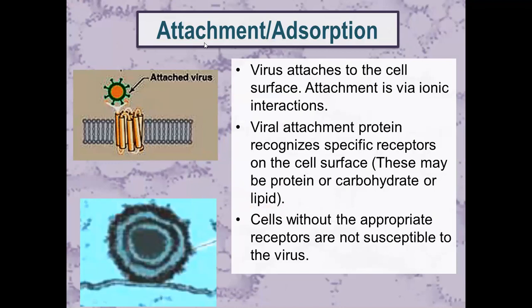The first step is attachment or adsorption of virus to the cell surface. It involves interaction between viral receptors and cellular receptors. In naked viruses, viral receptors are the capsid proteins; in enveloped viruses, they are the envelope glycoproteins. Cellular receptors may be proteins, carbohydrates, or sometimes lipids. If cells have no receptor, the virus cannot attach. For example, HIV can attach only to CD4 receptors present on T-helper cells and macrophages, so it infects only these cell types in the human body.